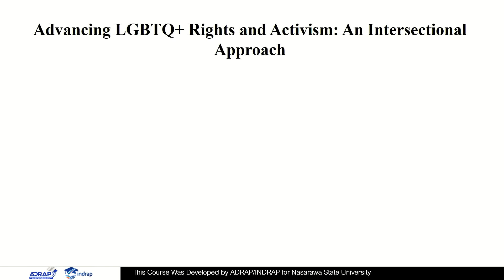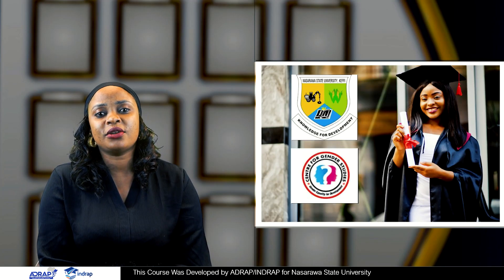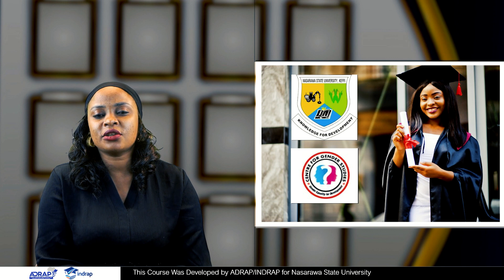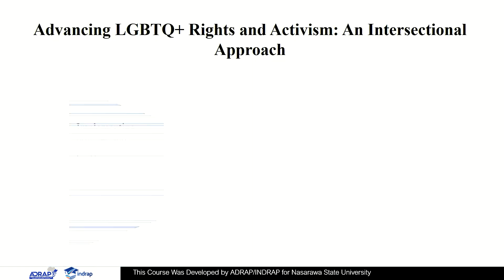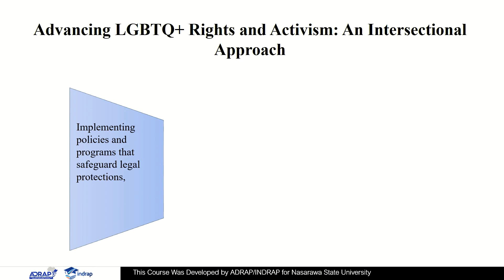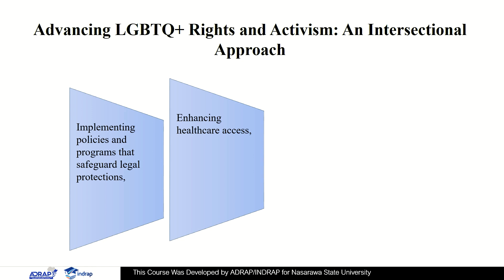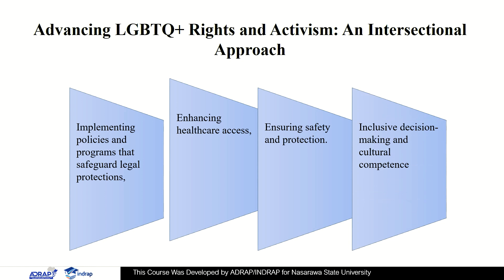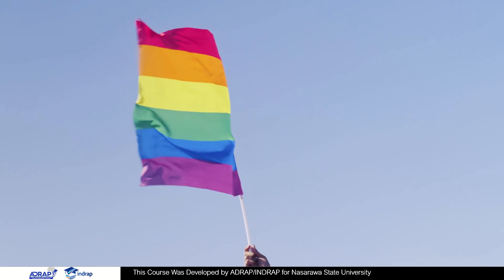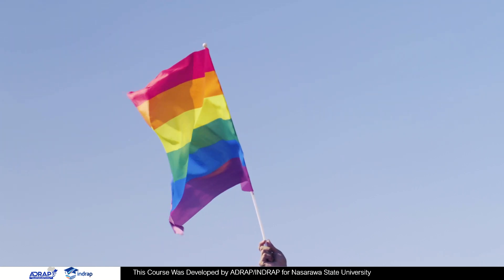How can we advance LGBTQ+ rights and activism? It is crucial to adopt a comprehensive and intersectional approach that acknowledges the diverse experiences and needs of LGBTQ+ individuals. This can involve implementing policies and programs that safeguard legal protections, enhancing healthcare access, ensuring safety and protection, and actively involving LGBTQ+ individuals in decision-making processes concerning their rights and well-being, as well as promoting culturally competent and inclusive services and programs.